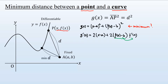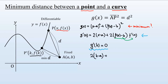Suppose the distance d becomes minimum when point P is at a specific location called P', with coordinates (k, f(k)). This must be the point where the derivative becomes zero. So we have: 2(k minus a) plus 2(f(k) minus b) times f'(k) equals zero.